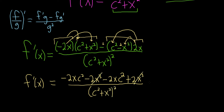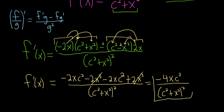These terms cancel, leaving negative 4x c squared on the numerator, over c squared plus x squared, quantity squared. That is the final answer.